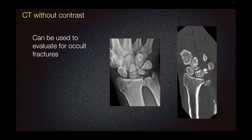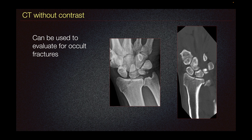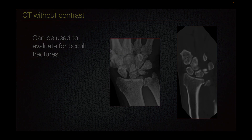CT without contrast can be used to evaluate for occult fractures associated with this dislocation. For example, in this patient, we do see the fracture here in the triquetrum and the distal radius, which we can also see here on CT. However, in some cases, fractures may be occult on radiograph, and if there is concern, then CT without contrast should be pursued.